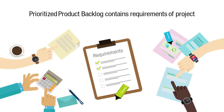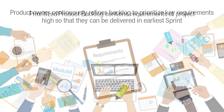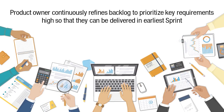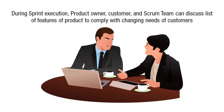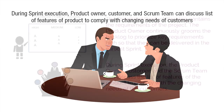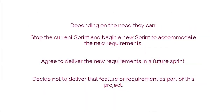The Prioritized Product Backlog contains the requirements of the project. The product owner continuously refines the backlog to prioritize key requirements high so that they can be delivered in the earliest sprint. During sprint execution, the product owner, customer, and the Scrum team can discuss the list of features of the product to comply with the changing needs of the customers. And depending on the need, they can stop the current sprint and begin a new sprint to accommodate the new requirements, agree to deliver the new requirements in a future sprint, or decide not to deliver that feature or requirement as part of this project.